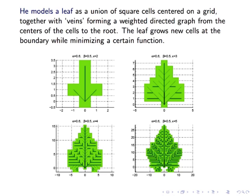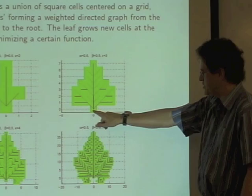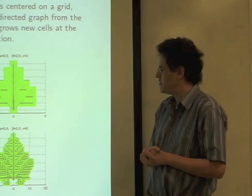So he models a leaf as a bunch of square cells, a bunch of square regions, which are centered on grid points in a square grid together with veins, which are these line segments here, which form a graph. That is, they have edges and vertices, corners where the veins meet, that all go from the center of each cell ultimately to the bottom of the leaf. And the idea is that he writes a description where a leaf grows by continuing to add new cells at the boundary while minimizing a certain function.